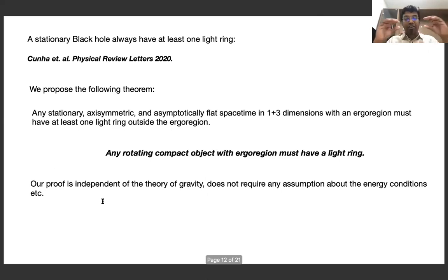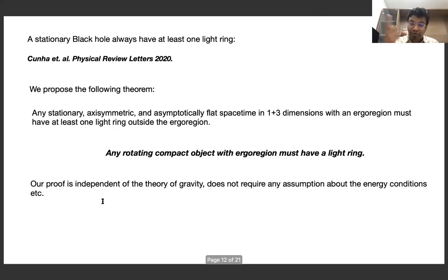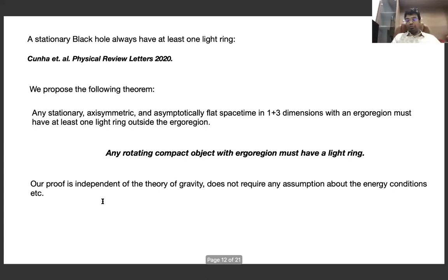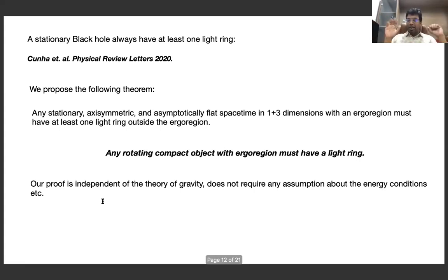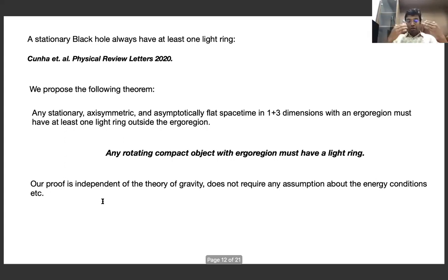For black holes with an event horizon, there is another paper by Cunha and collaborators (2020) proving that a stationary black hole always has at least one light ring. But there is no proof that a compact object without a horizon must have a light ring. This is where our new theorem comes in: any stationary axisymmetric asymptotically flat spacetime in 3+1 dimensions with an ergo region must have at least one light ring outside the ergo region.